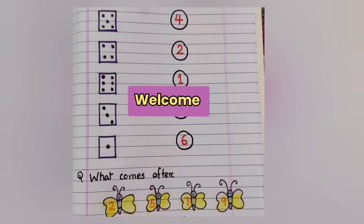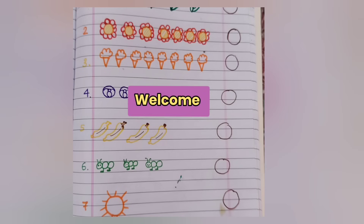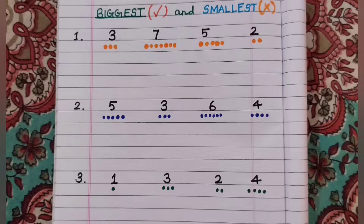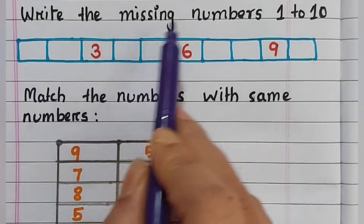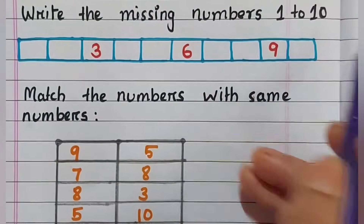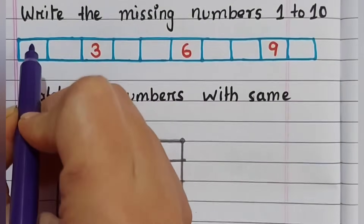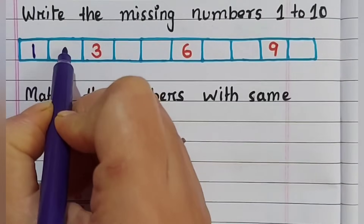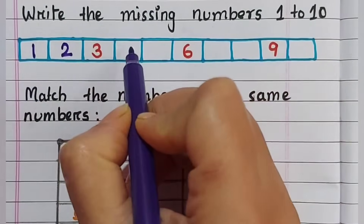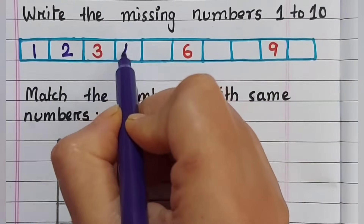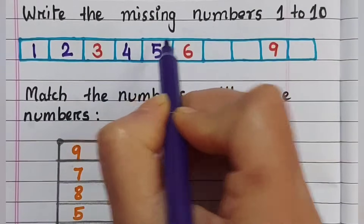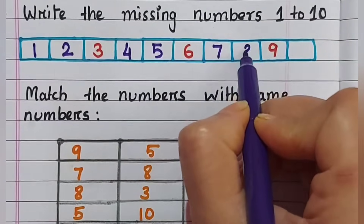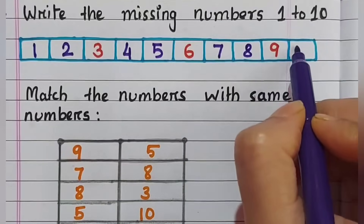Today I have prepared some worksheets of numbers one to ten. Write the missing number from one to ten. First, I have to write one, two, three is given, then four, five, six is given, seven, eight, nine, then ten.